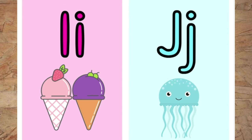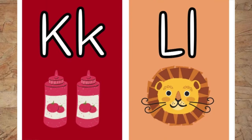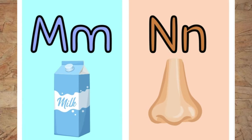I is for ice cream. J is for jellyfish. K is for ketchup. L is for lion. M is for milk.